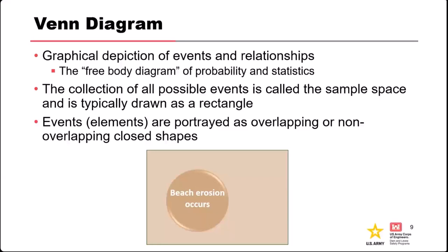The collection of all the possible events that could occur, or all possible items that could be in the set, is called the sample space, and we usually draw that as a rectangle. Individual elements or events we usually draw as either overlapping or non-overlapping closed shapes — circles are pretty common, but they could be any shape. The idea is that how we draw them, in terms of whether or not they overlap other events, tells us something about how those events relate to one another.